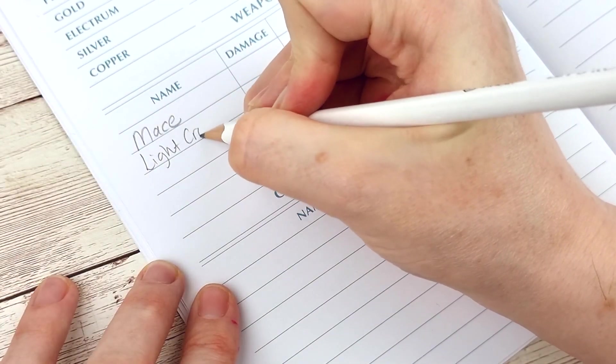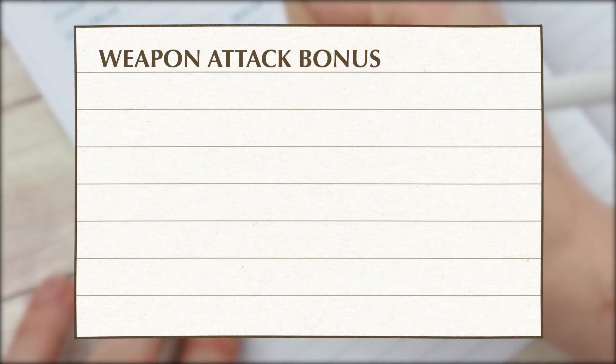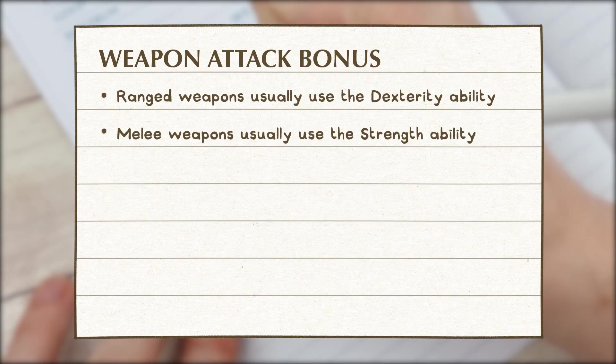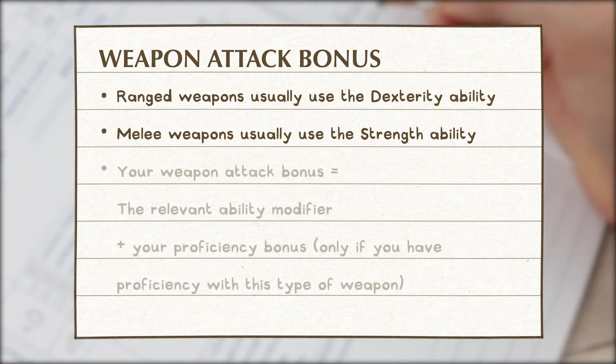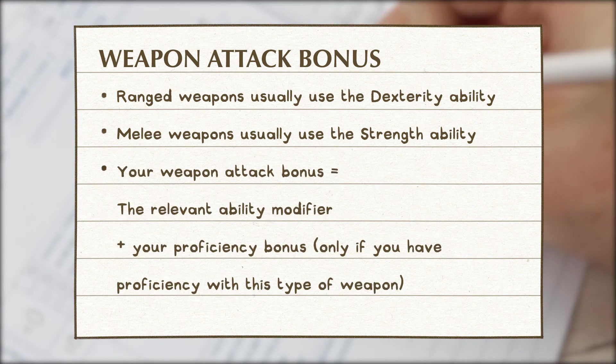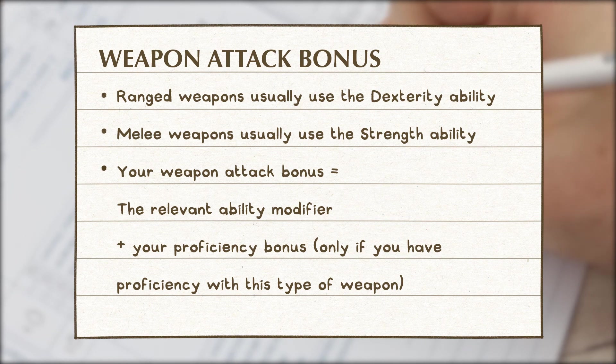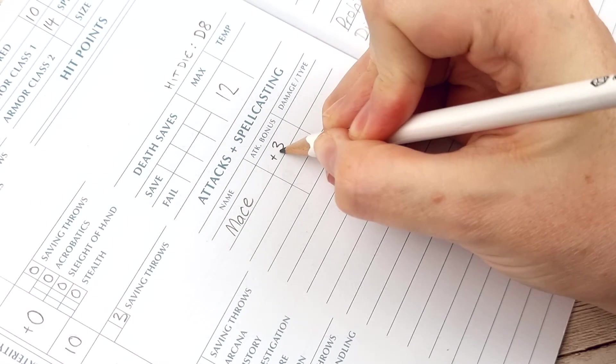Now to note down your weapon details. Like individual skills individual weapons are associated with an ability score. In general this is dexterity for ranged weapons and strength for melee weapons. You can determine the attack bonus by either starting with the dexterity or strength modifier, whichever one is relevant, and then if you are proficient with that weapon adding your proficiency bonus.